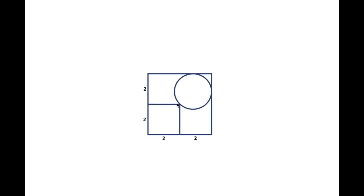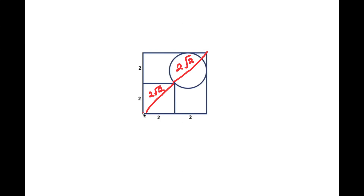Now, from here, we also know that if the end of the square to the middle is 2√2, then the middle to the other end should also be 2√2. So we can say that the big diagonal, which is from end to end, is equal to 2 times 2√2, which is equal to 4√2.